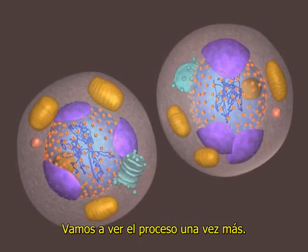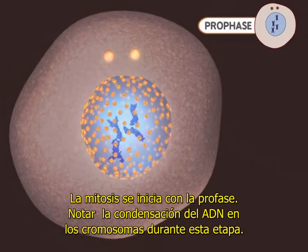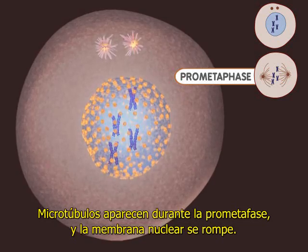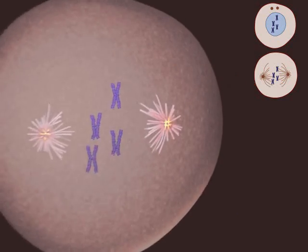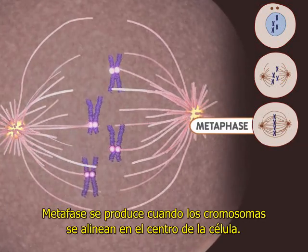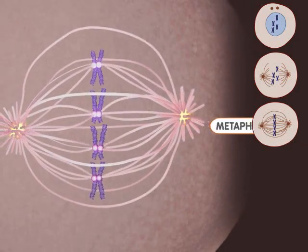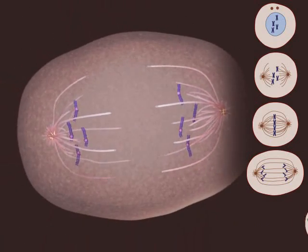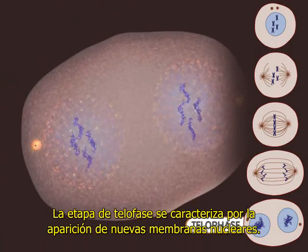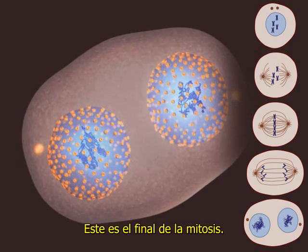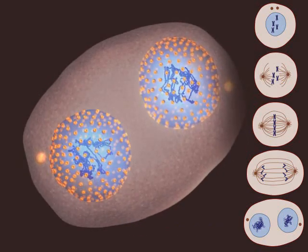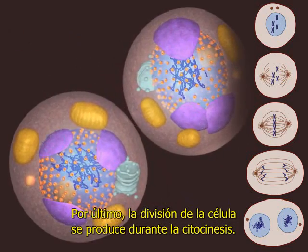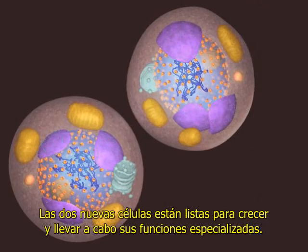Let's watch the process one more time. Mitosis begins with prophase — notice the DNA condensing into chromosomes during this stage. Microtubules appear during prometaphase and the nuclear membrane breaks down. Metaphase occurs when the chromosomes are aligned at the center of the cell. During anaphase, the chromosomes are moving apart. The telophase stage is marked by the appearance of new nuclear membranes. This is the end of mitosis. Finally, the splitting of the cell occurs during cytokinesis. The two new cells are now ready to grow and perform their specialized functions.